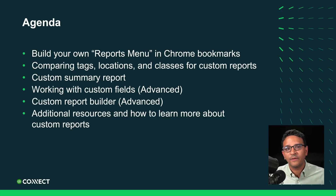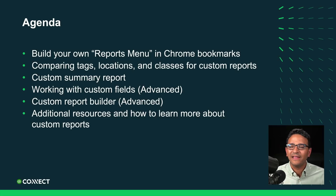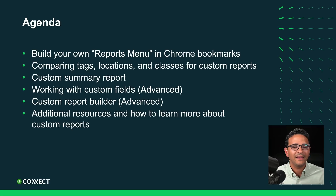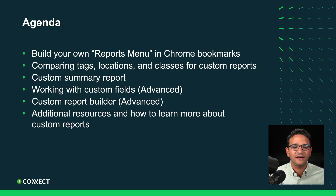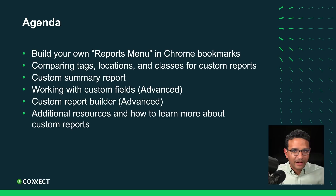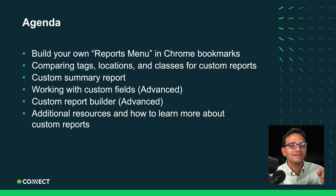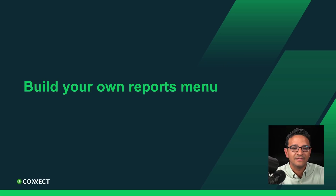We're going to talk about tags, locations, and classes, compare them, and do a couple of examples of how that gives you better information for your custom reporting needs. Then we'll talk about the custom summary report — some people call it the hidden report because it's kind of hard to get to, and it has really different functionality than all other reports in QuickBooks Online. Then we'll move on to the advanced version of QuickBooks Online and features available only in Advanced, such as custom fields and the new custom report builder, which is the most powerful report building tool in the entire QuickBooks world. Lastly, we'll talk about additional resources to learn about reports after this session.